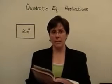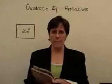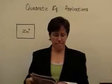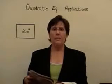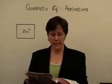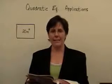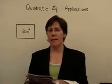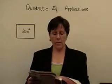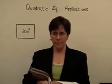The first problem I'd like to look at is number 2 in section 3 of your text. It reads: the width of a rectangular feedlot is 8 meters less than the length. The area is 20 square meters. Find the length and the width.